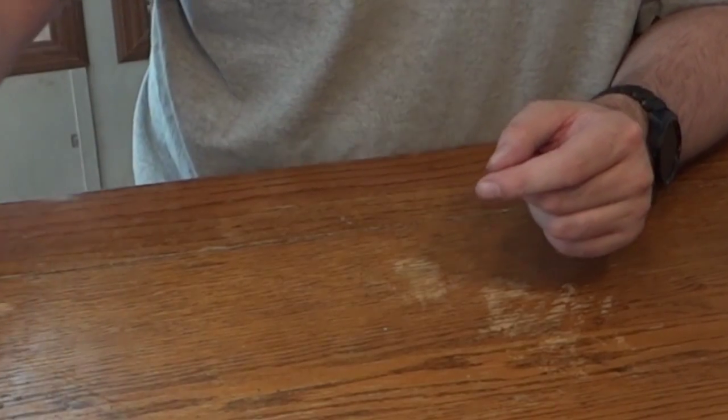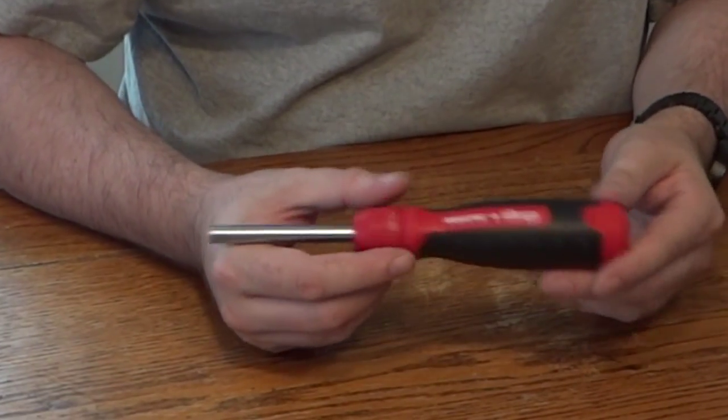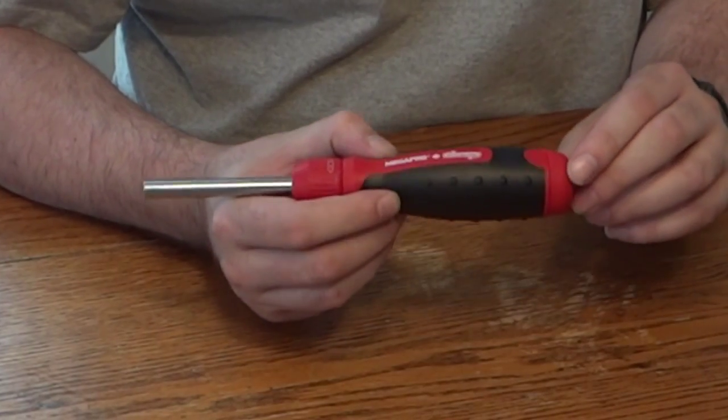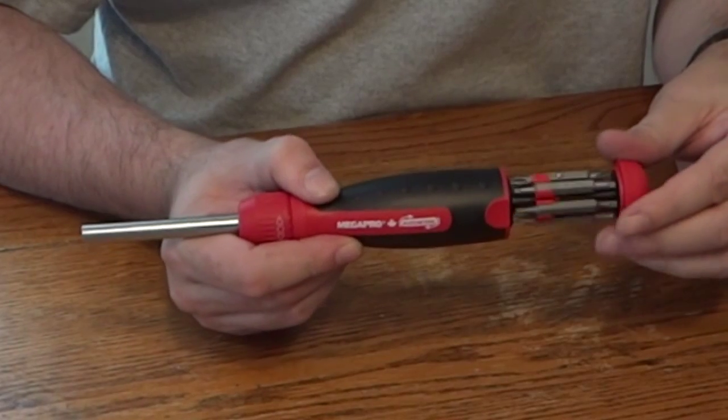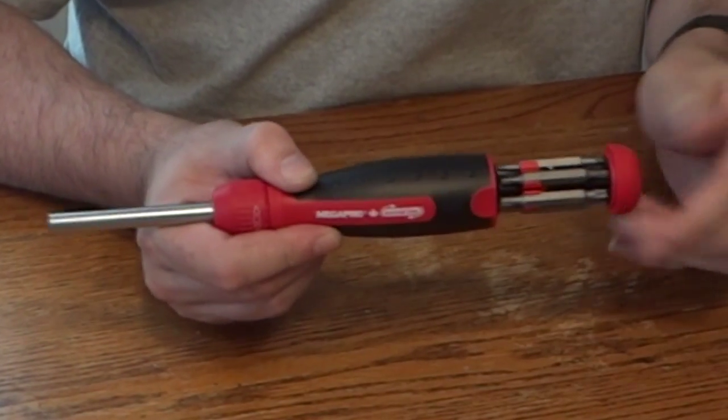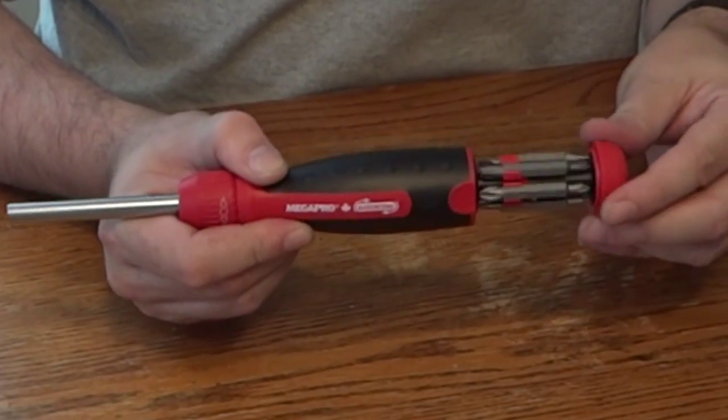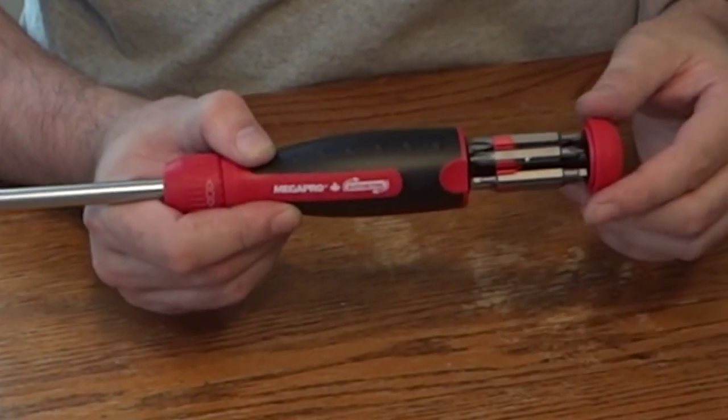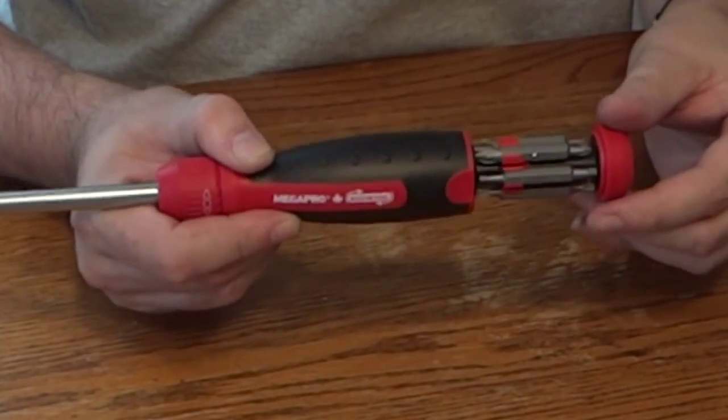The other screwdriver we're going to look at is the Mega Pro ratcheting. This is a 13-in-one option. It has all the same bits contained within the handle except the R0 and the R3 Robertson bits. You still have the four Torx, the two flat blades and the four Phillips bits. So that you can do pretty much everything around the house again.